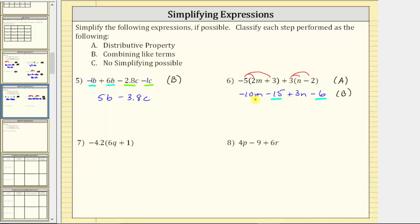In the simplified expression, we have negative ten m plus three n. Negative fifteen minus six is equal to negative twenty-one, so we write minus twenty-one.